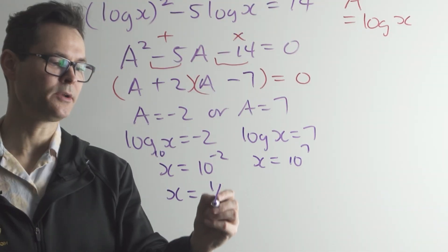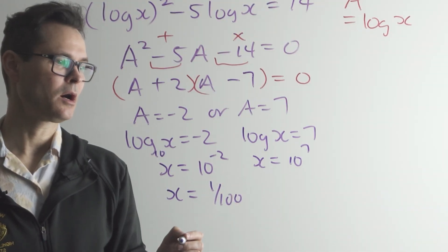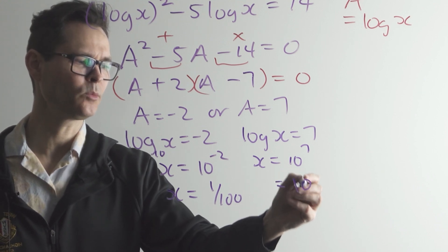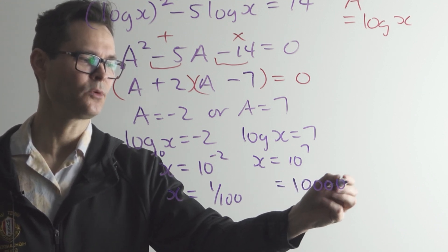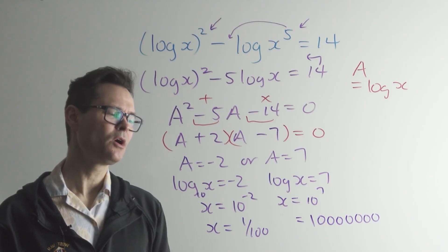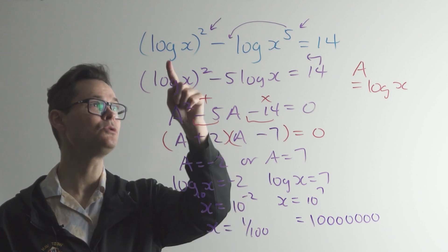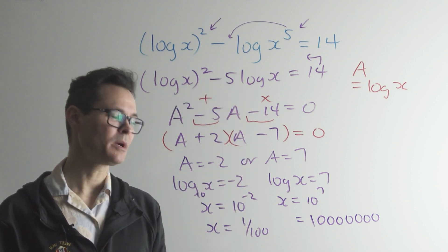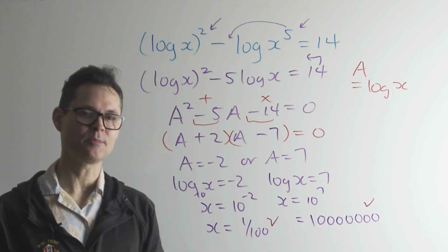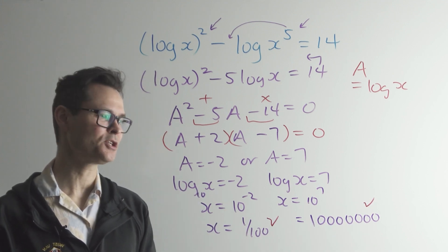You can clean these up a little bit. You could write that as 1 over 100. You could expand that out as being a 1 with 1, 2, 3, 4, 5, 6, 7 zeros. It doesn't matter. I'm sure your teacher's going to be fine with it. Also, do make sure that your answers do balance the original equation by plugging them back in. I will tell you, just for the purpose of this video, that they both work. They both satisfy the original equation.